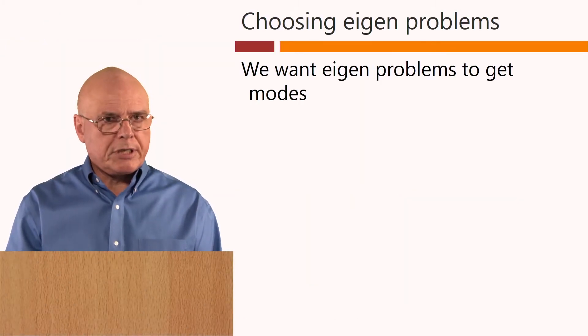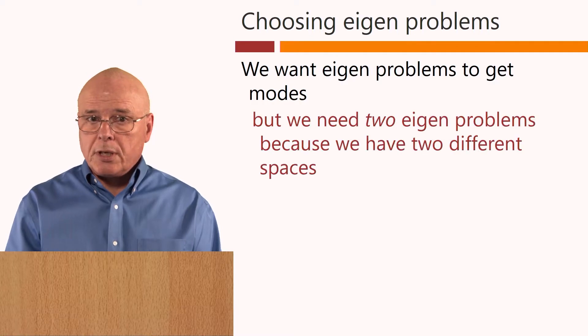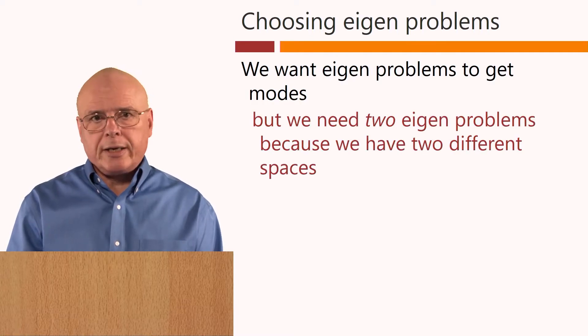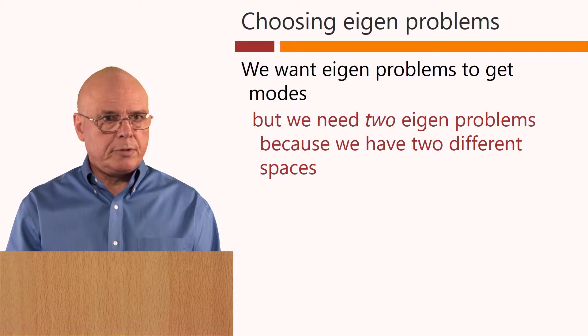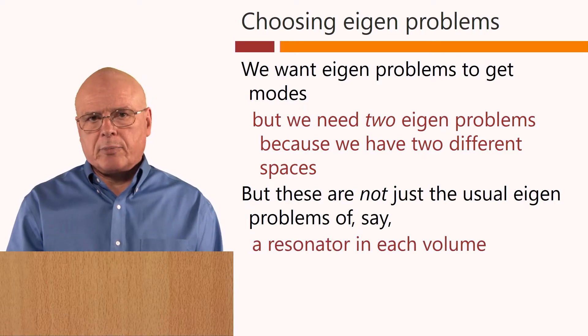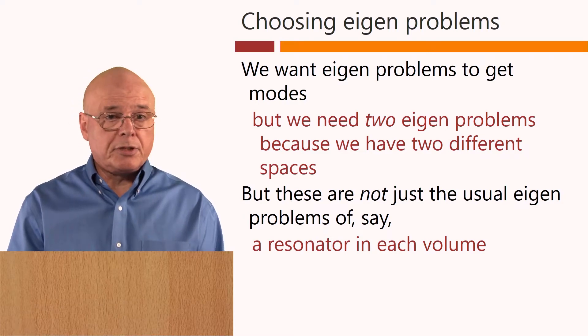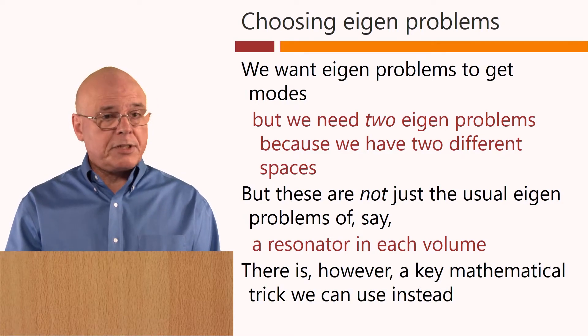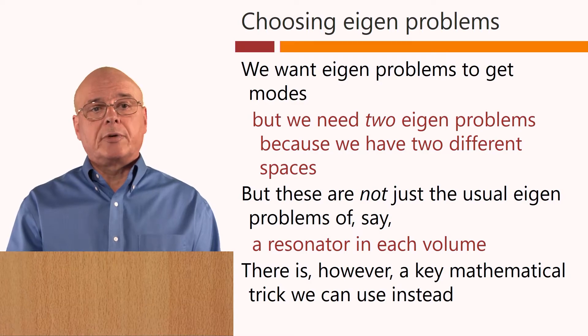Now, we want eigenproblems to get modes, but we need two eigenproblems because we have two different spaces. And these are not, therefore, just the usual eigenproblems of, say, a resonator in each volume. There is, however, a key mathematical trick we can use instead.